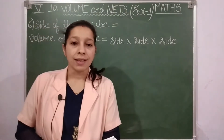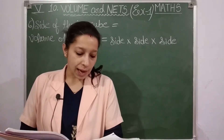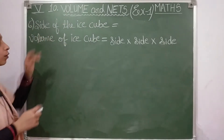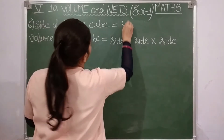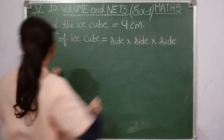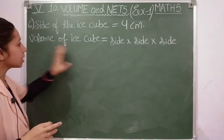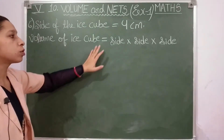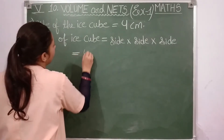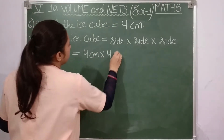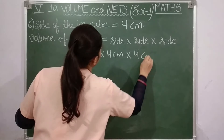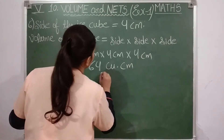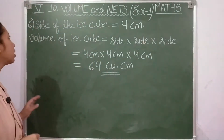Question six: find the volume of an ice cube, each side being four centimeters. So the side of the ice cube is four centimeters. The formula for volume of a cube is side × side × side. Applying the formula: four × four × four — four fours are sixteen, sixteen fours are sixty-four — so sixty-four cubic centimeters is our answer.